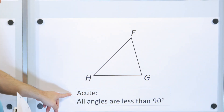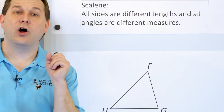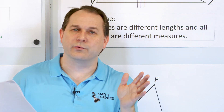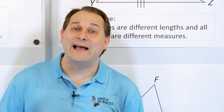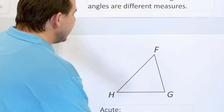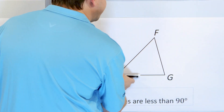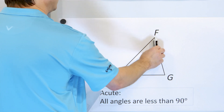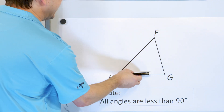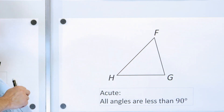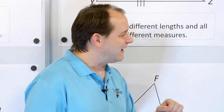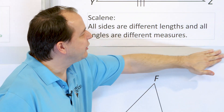We have what we call an acute triangle. If all of the angles on the inside are acute — meaning less than 90 degrees — then if you think of a 90-degree angle as straight up and down, this angle is acute, this angle is acute, and this angle is also acute. If all angles are less than 90, we call it an acute triangle.